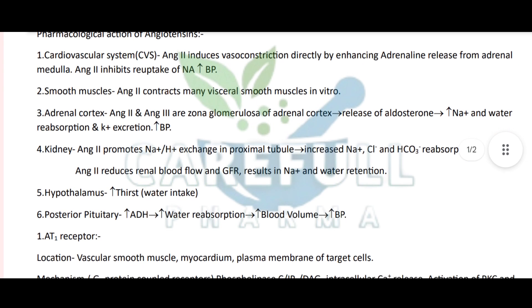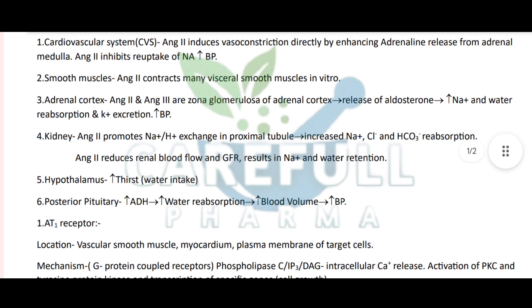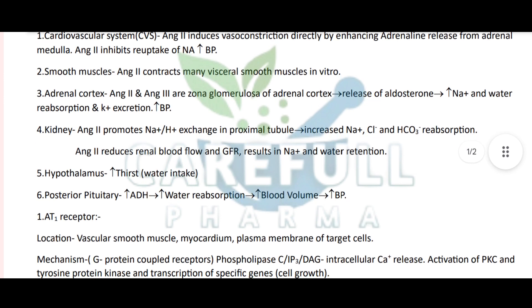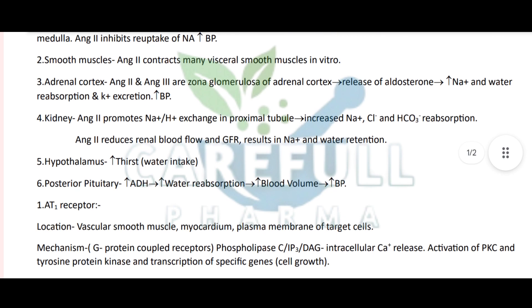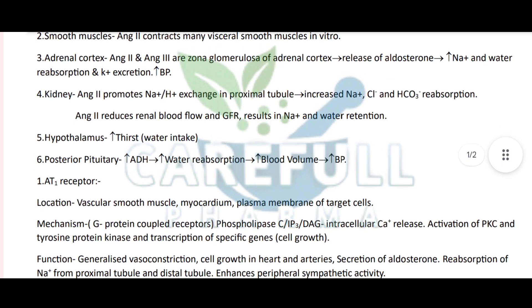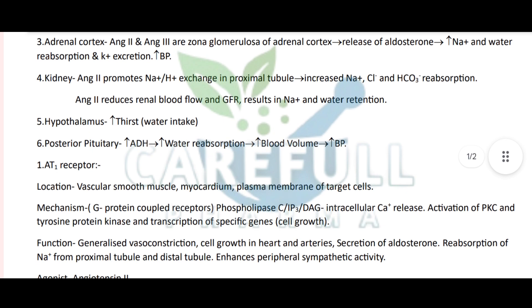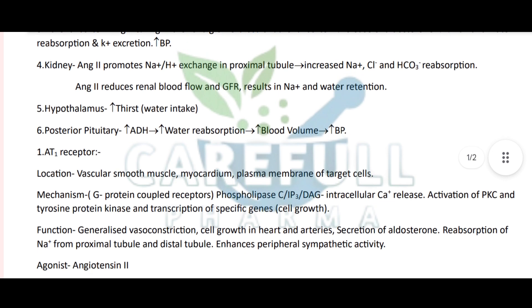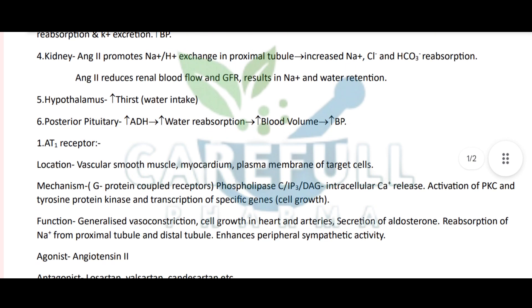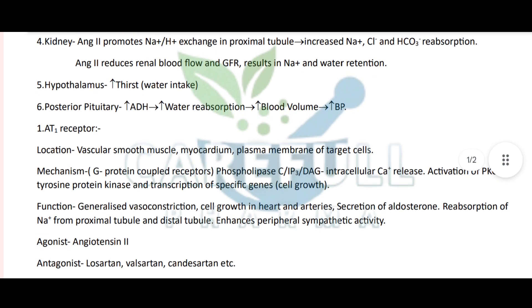4. Kidney - Angiotensin II promotes Na+/H+ exchange in the proximal tubule, increasing Na+, Cl- and HCO3- reabsorption. Angiotensin II also reduces renal blood flow and GFR, resulting in Na+ and water retention. 5. Hypothalamus - stimulates thirst and water intake. 6. Posterior Pituitary - promotes ADH release, causing water reabsorption, increasing blood volume and BP.